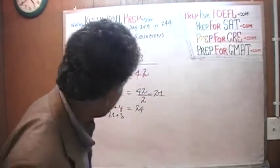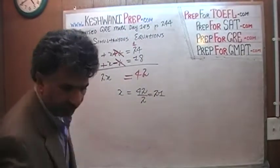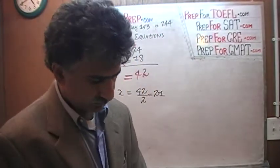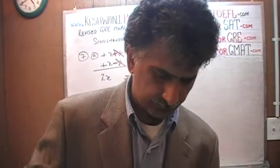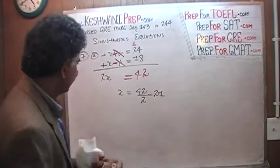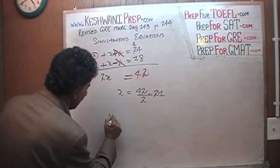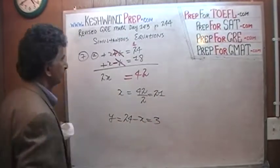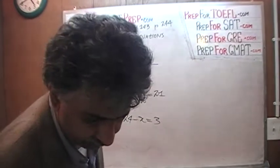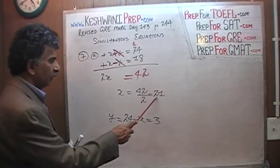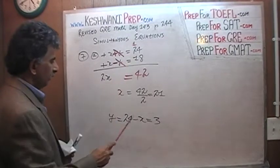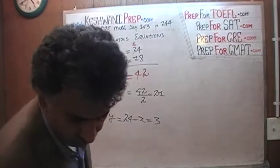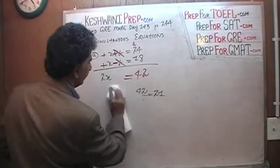If you want to solve it properly and show the proper work: x is 21, and y from the first equation we know is 24 minus x, which is 3. It only takes a couple of seconds to verify — 21 plus 3 is 24, and 21 minus 3 is 18. It works. Let's do the next one.